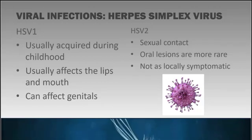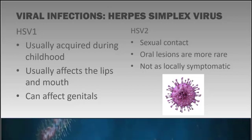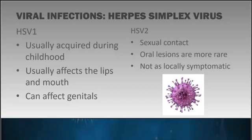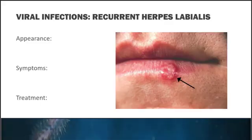Moving on to herpes simplex virus — there are two types: HSV1 and HSV2. HSV1 is very common and is usually acquired during childhood, when children get inoculated from their parents or siblings. This virus usually affects the lips and the mouth, though it can affect the genital area. HSV2 is contracted through sexual contact; oral lesions are more rare. There is a difference in how these two are contracted, and HSV1 is the one we'll see very frequently in practice.